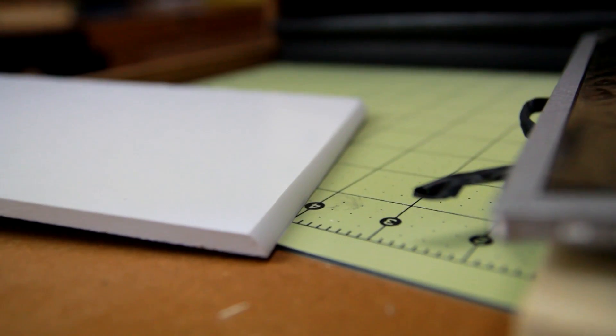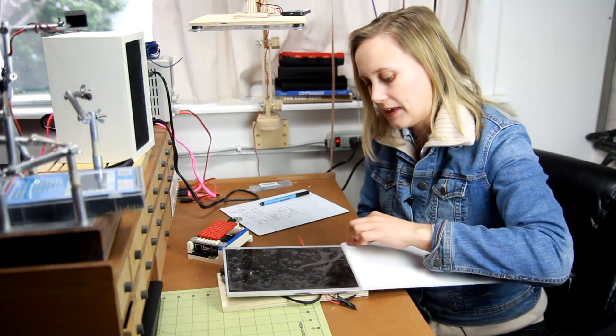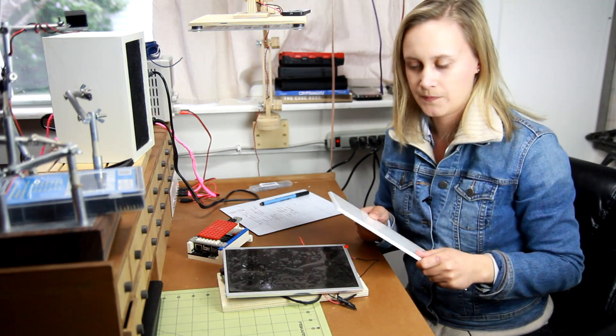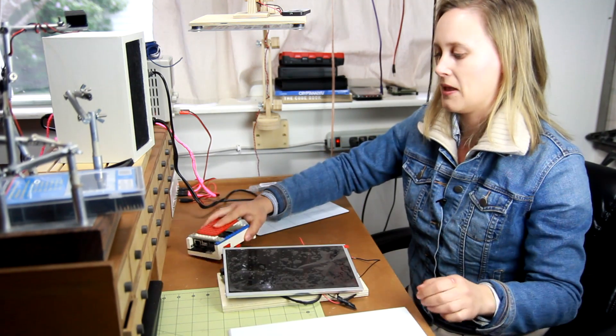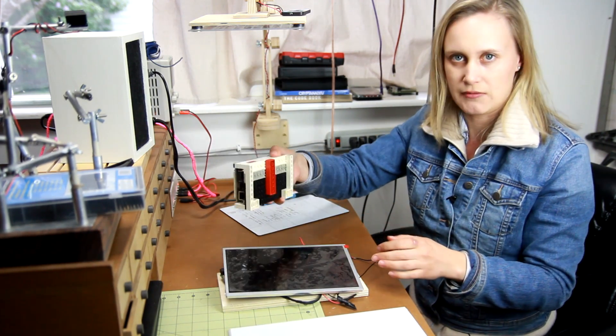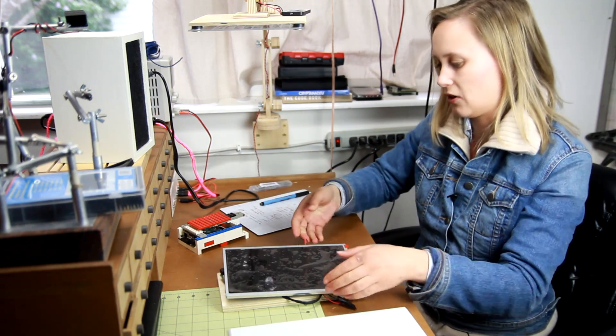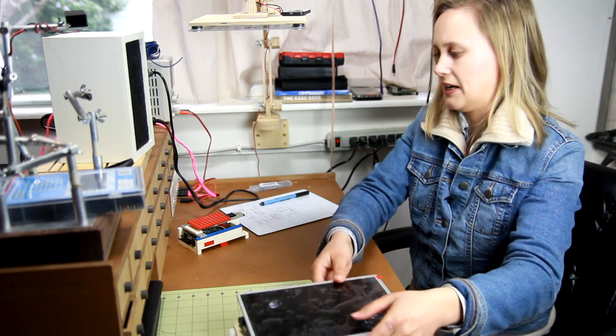So now I'm thinking that wouldn't it look kind of awesome if I made like a little case with sides and it would hold all of these things and then on the back of it I could maybe have a little box that the Raspberry Pi connects to. And I really like the idea of that. I think that could be really nice.